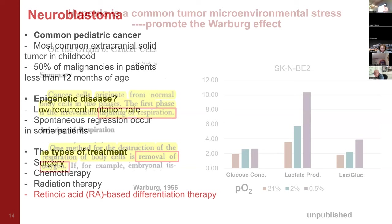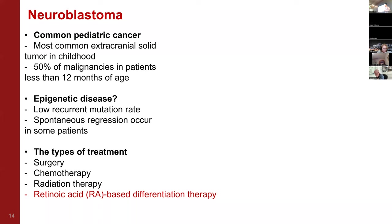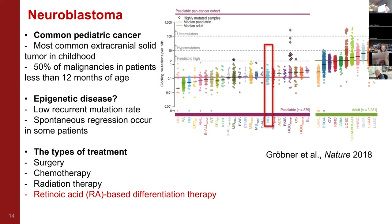The system we use to test this hypothesis is neuroblastoma, a common pediatric cancer where about 50% of patients are less than one year old. More and more evidence suggests that pediatric cancers, including neuroblastoma, are not genetic diseases but more like epigenetic diseases, because they carry much less somatic mutation compared to adult cancer. Less than 10% of neuroblastoma patients have an identifiable recurrent mutation, and in some cases spontaneous regression can occur without any treatment. Despite this difference, most pediatric cancers are still treated with traditional therapy — surgery, radiation, chemo. Fortunately, neuroblastoma patients also respond to retinoic acid-based differentiation therapy.